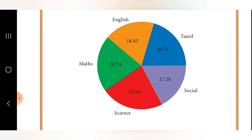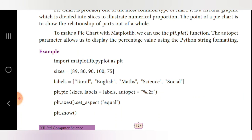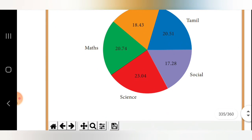In the output, we can see each subject's share. For example, Tamil has a value of 89, which corresponds to 20.51% of the total. The percentage is calculated by adding all values and dividing each by the total. The autopct parameter is used to display these percentage values in the format '%.2f', showing two decimal places for each slice.